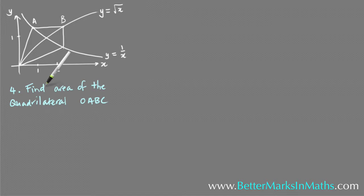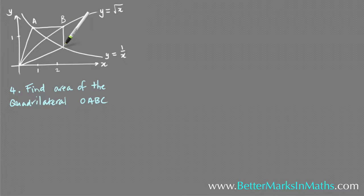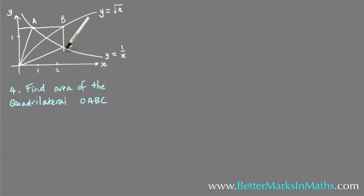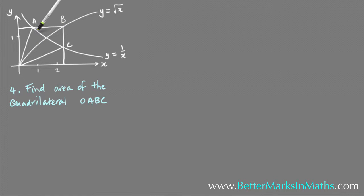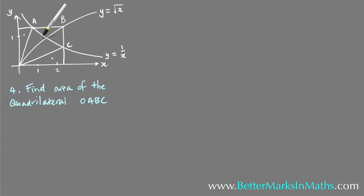In question 4 you have to find the area of the quadrilateral OABC, which is a kite-shaped quadrilateral. This is horizontal and this is vertical. What you need to do is make this a rectangle by extending the sides, so that's the rectangle there. Opposite sides are parallel and equal in length. The area of the kite shape OABC is going to be the area of that rectangle minus the area of the two triangles.